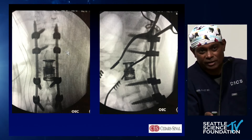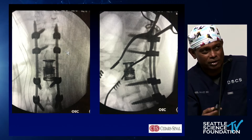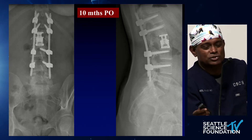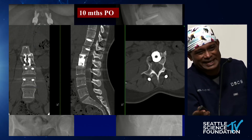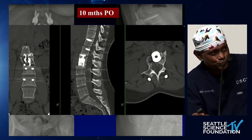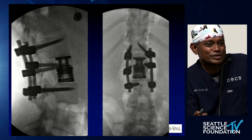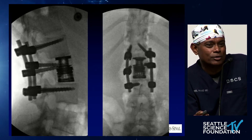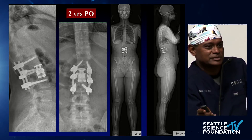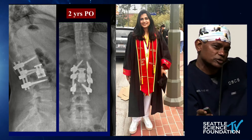We did an MIS corpectomy — sub-diaphragmatic, no rib resection, through a one-and-a-half-inch incision at L2, just as we showed you. Removed all the pieces; they all came out. Put a cage in — two levels up, two levels down. At ten months post-op she was already starting to heal with good bone forming. CT scan showed the lower segment of the corpectomy hadn't fully healed, so we cut the rod above and below, leaving a monosegmental fusion, and added two more screws in between for solid single-segment fixation. She's 22 with a massive burst fracture — that's what she got. Two years post-op: absolutely asymptomatic, graduated, works at Morgan Stanley.